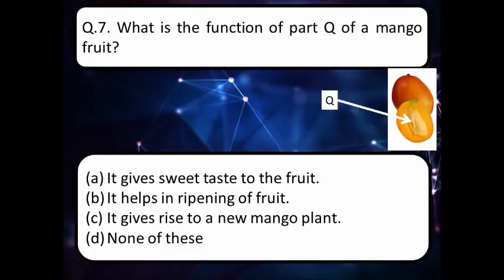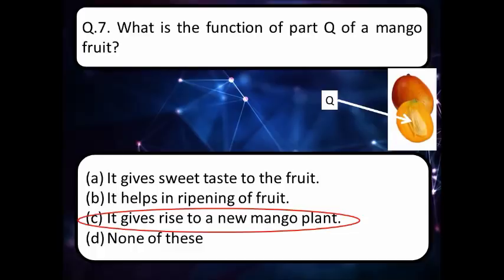Our next question is: what is the function of part Q of a mango fruit? You can see part Q in the picture. Read the options carefully — it gives sweet taste to the fruit, it helps in ripening of fruit, it gives rise to a new mango plant, or option D none of these. The correct answer is option C: it gives rise to a new mango plant.